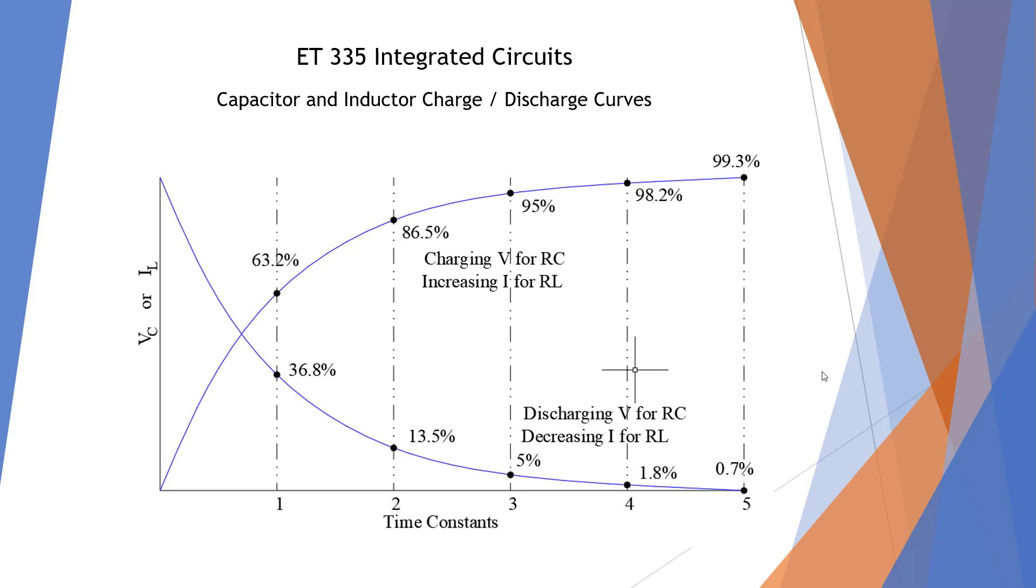Here I'm showing standard capacitor-inductor charge-discharge curves, and it goes up by time constants—resistance times capacitance—and each time constant we know where that curve is going to be. So if we look at this top curve, that is the charging. It's voltage for RC and current for RL, but we're going to look at the charging voltage.